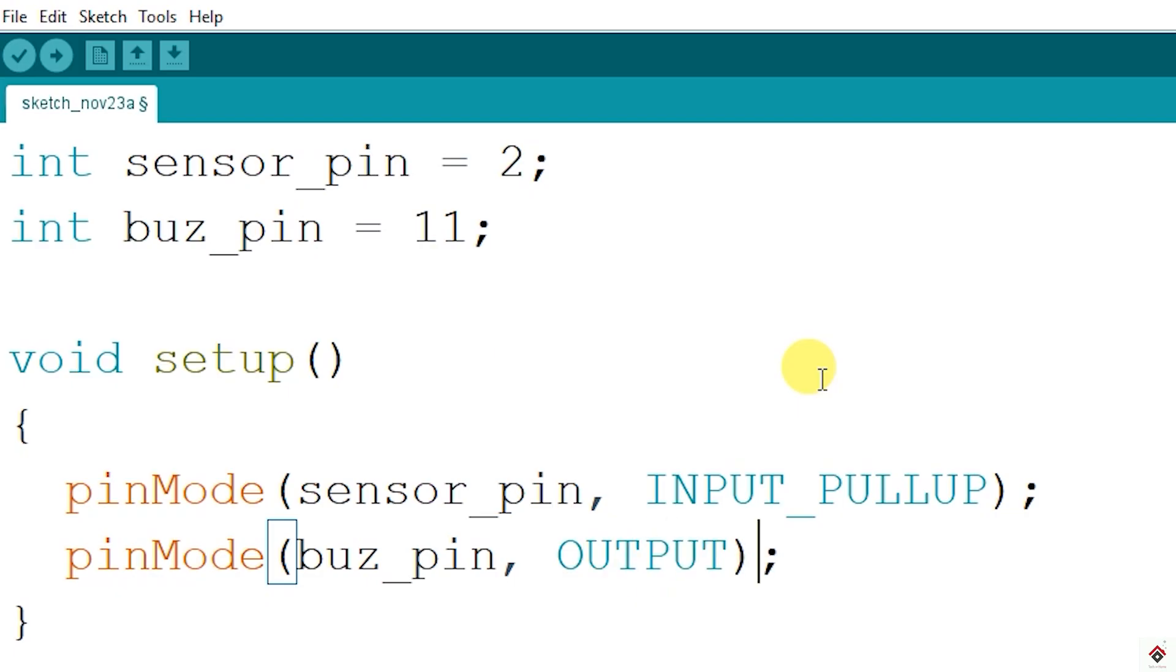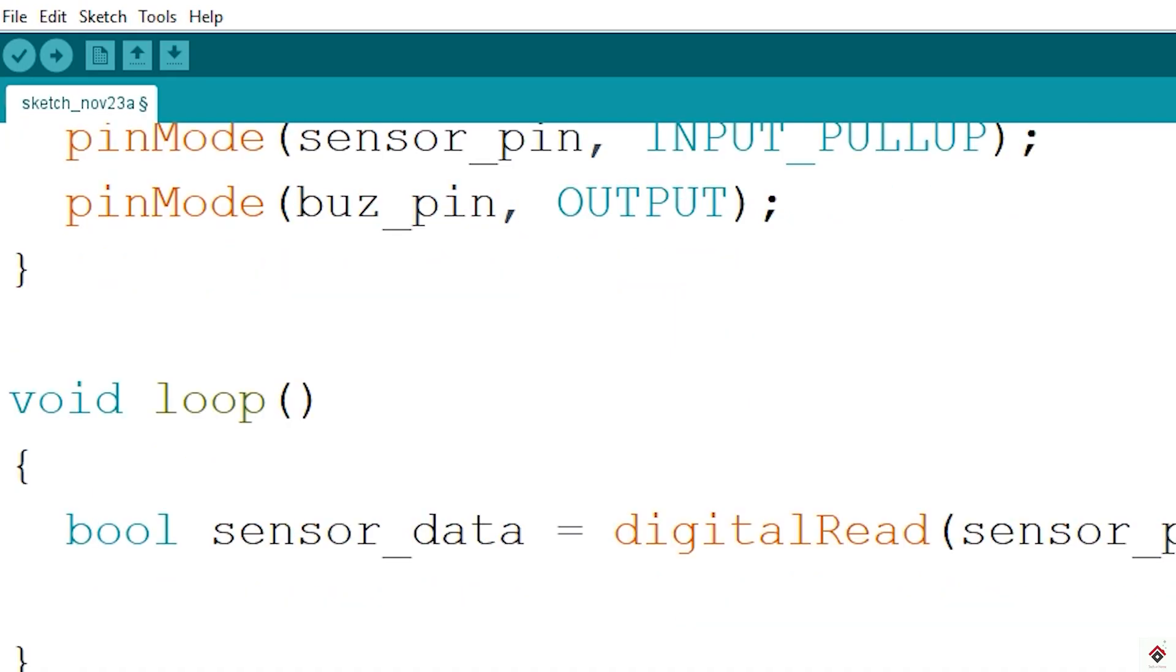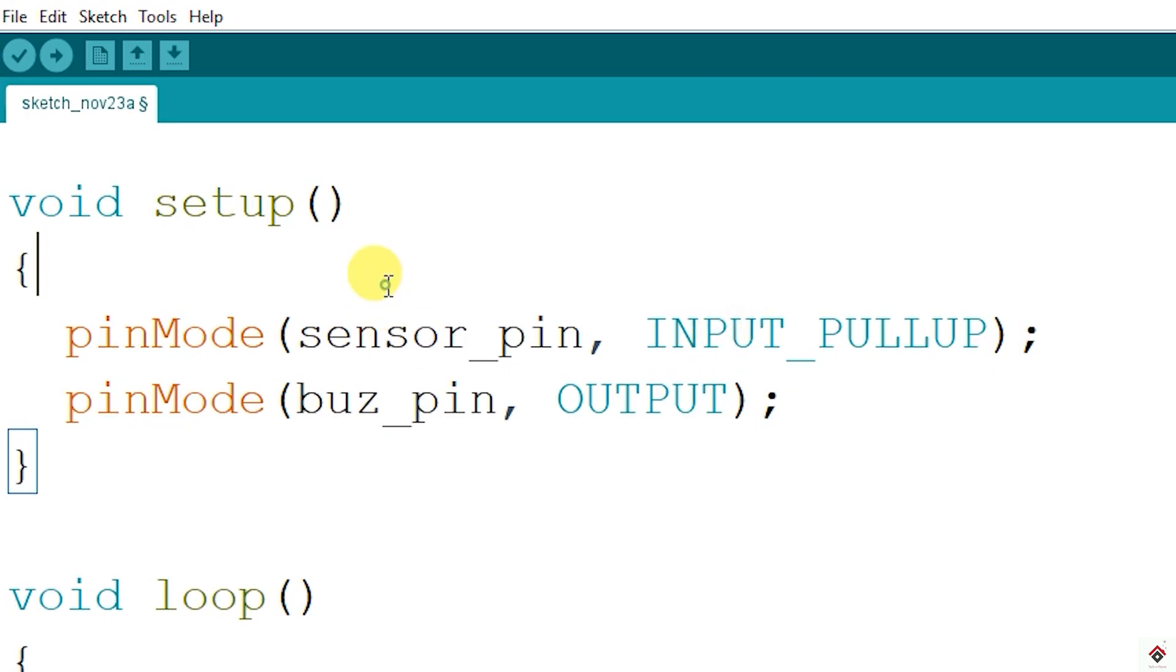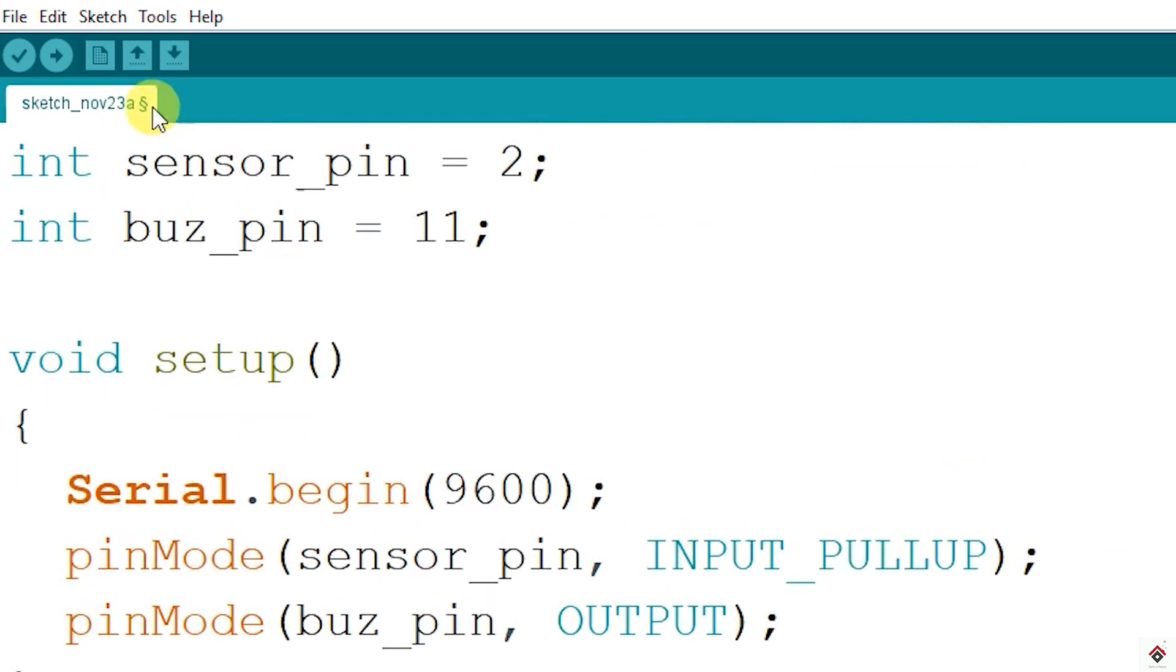In the loop, we'll read the sensor pin using the digitalRead function and will store the output of the function to a variable called sensor_data. Since we will get only two values, 0 and 1, I'll declare it with bool data type. Before controlling the buzzer, we'll try to see the values of the sensor on the serial monitor. So I'll add Serial.println and print the value present in this variable. In the setup, also make sure to initialize the serial communication. First, we'll upload the code till this point to see the values.